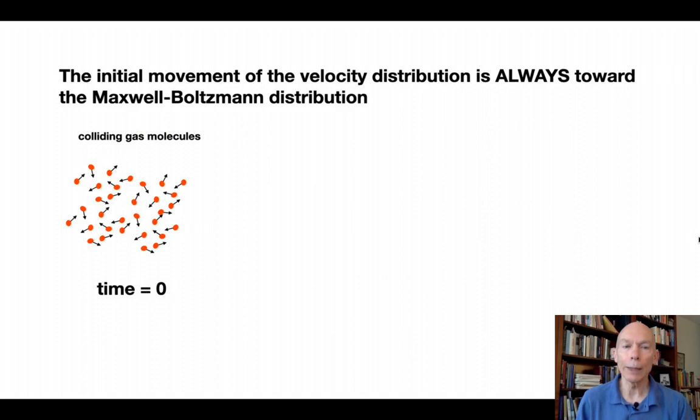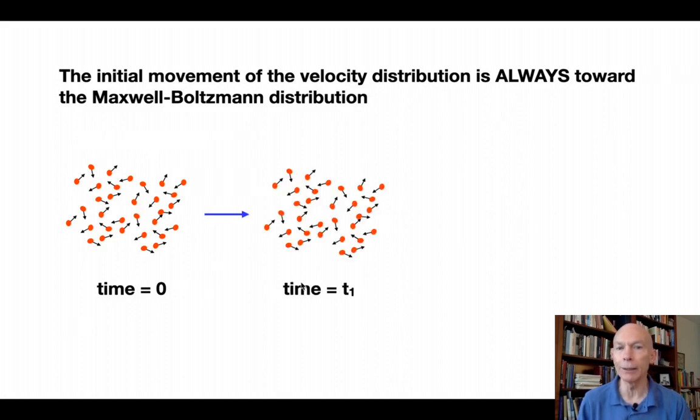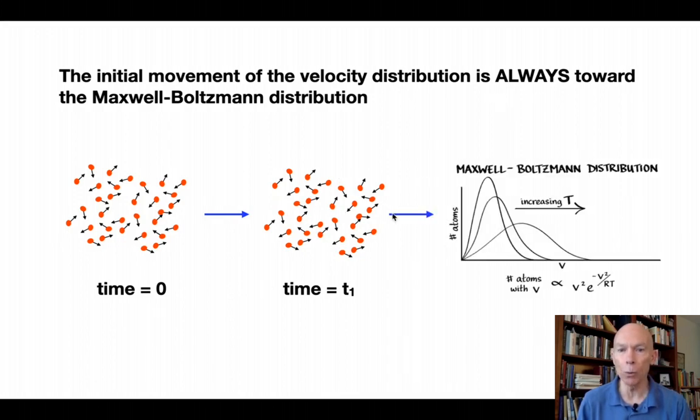So what he was really saying here was that, again, the mathematics were very difficult here. The initial movement of the velocity distribution is always towards the Maxwell Boltzmann distribution. Here at time zero, colliding gas molecules, and then he looked at time t equals one, and again looked at that distribution, and he said this direction always moved in the direction of the Maxwell Boltzmann distribution.